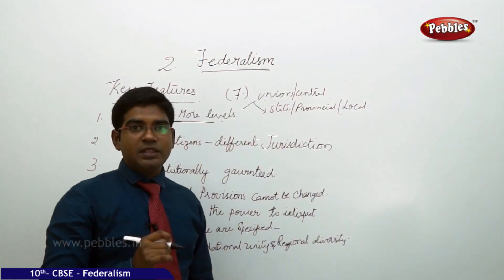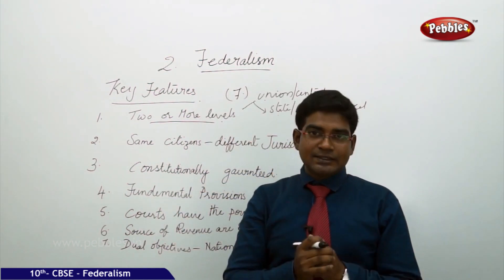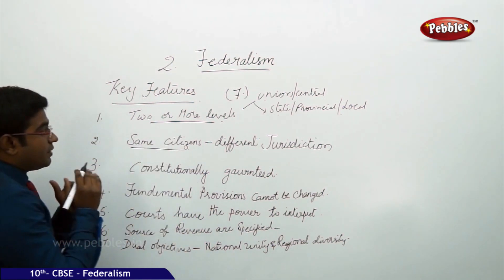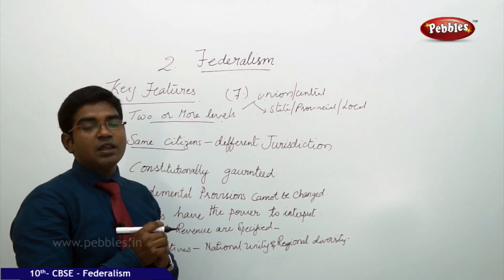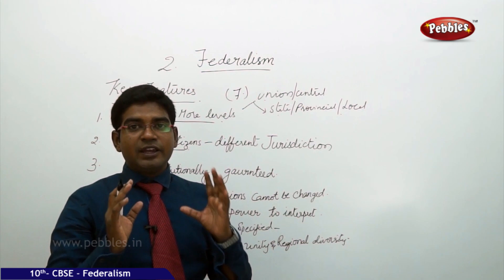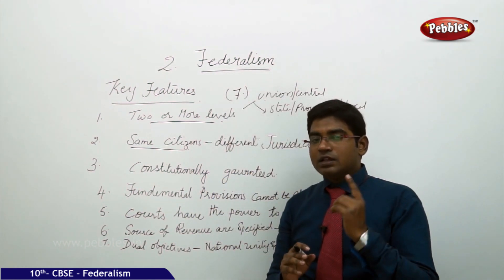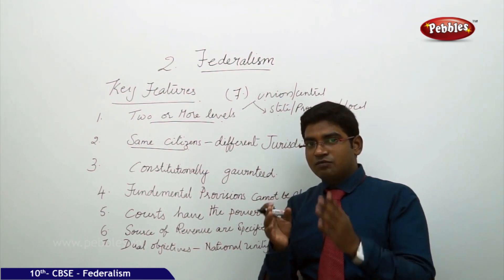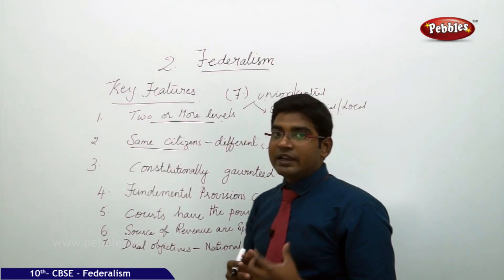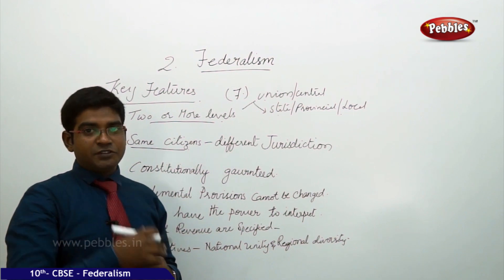So the first basic feature of federalism is that there should be two or more than two sets of governments. Then there should be a written agreement through mutual concern. The next basic feature is that the two levels of government govern the same citizens. For example, in India, though we belong to a particular state like Telangana or Andhra Pradesh, we are all Indians — Indian citizenship governed by the union government for some subjects, state governments for other subjects, and local governments for local issues.